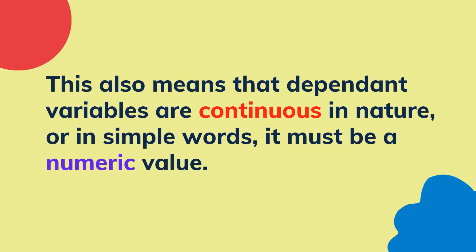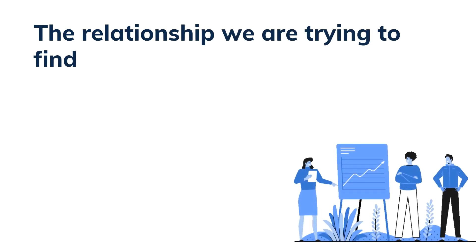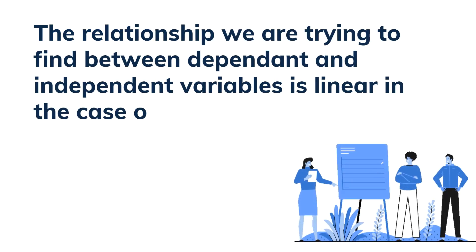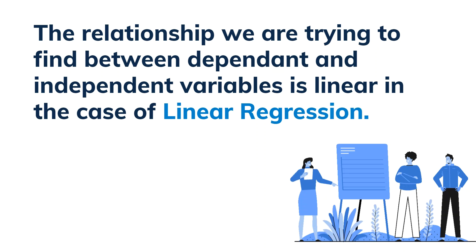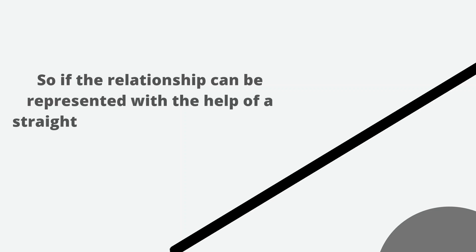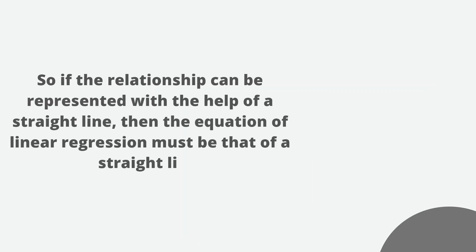This relationship we are trying to find between dependent and independent variables is linear in the case of linear regression. So if the relationship can be represented with the help of a straight line, then the equation of linear regression must be that of a straight line.